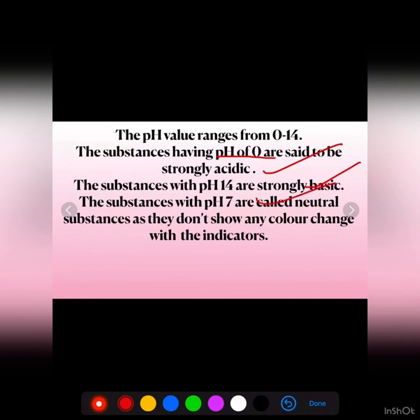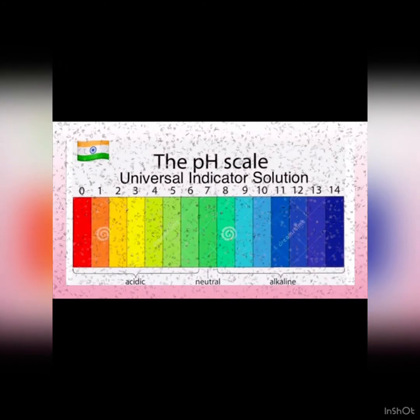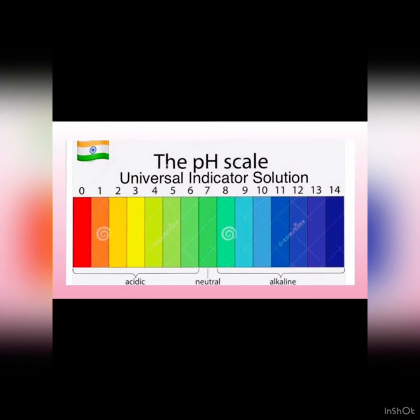Substances which don't show any color change with indicators are known as neutral substances. This is the pH scale, and it gives different colors at different pH values.